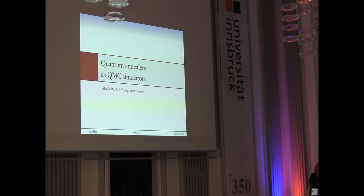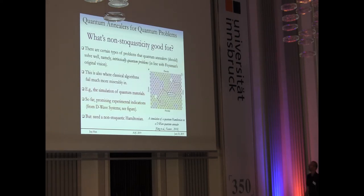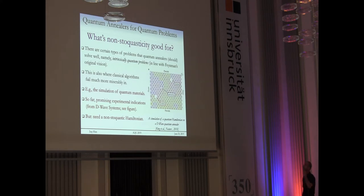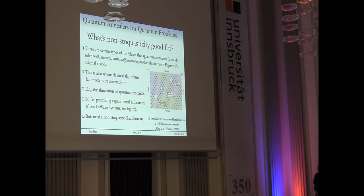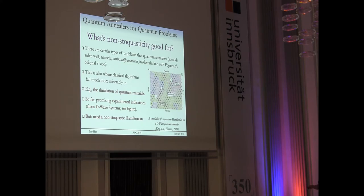In the five minutes I have left: if not for optimization, how should we use quantum annealers? The answer comes from Feynman, who said we should use quantum computing devices to solve quantum problems. This has already started taking place — there is a Nature paper by King et al., and work by Richard Harris showing that if you stop annealing in the middle and start measuring, you're sampling a quantum Hamiltonian. To get speedups in this regime, you actually need a non-stoquastic Hamiltonian.